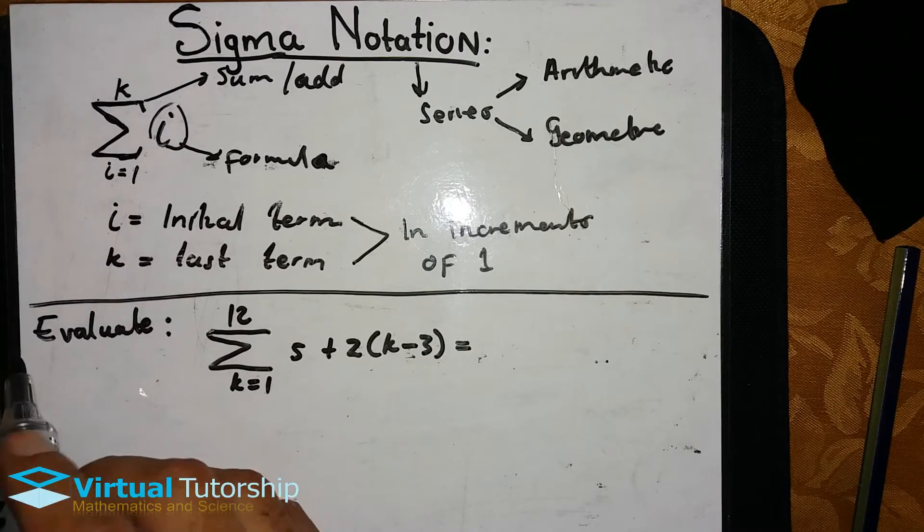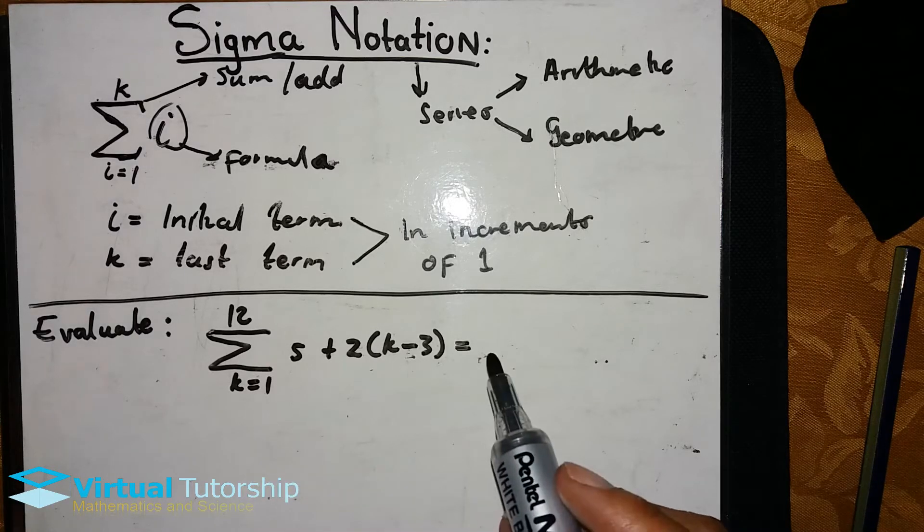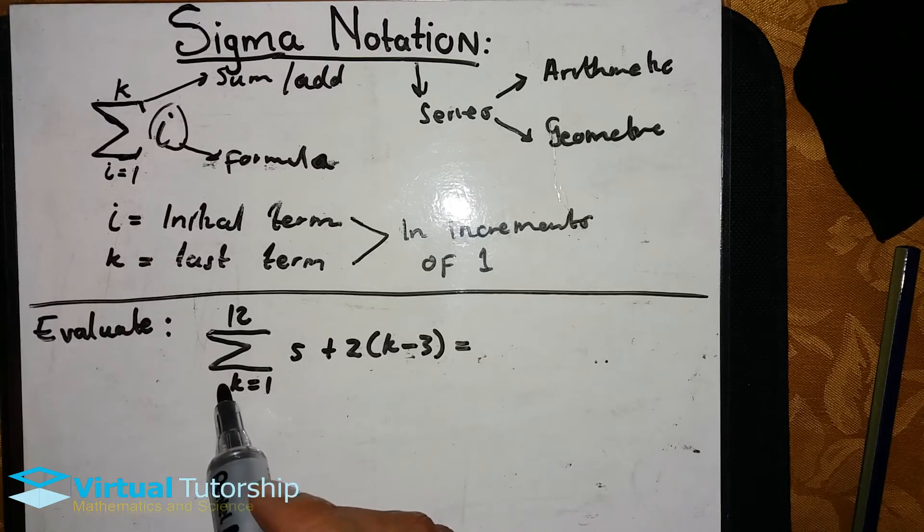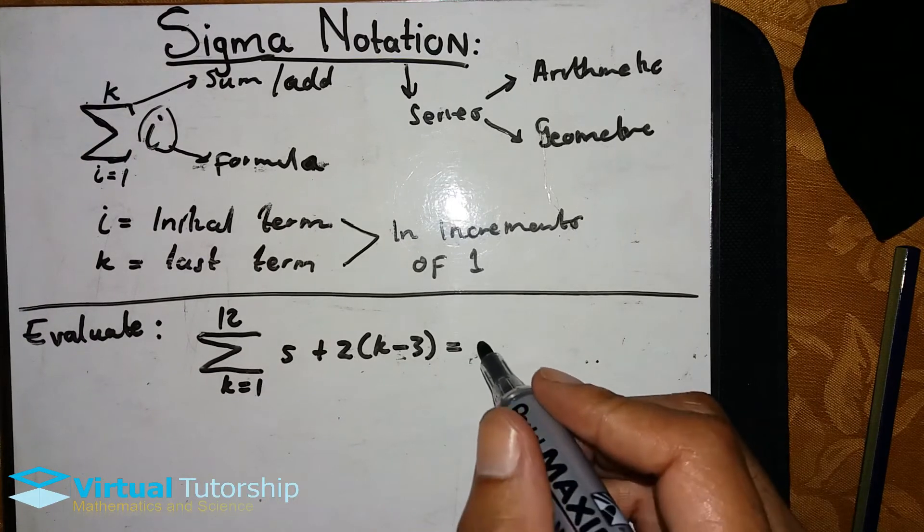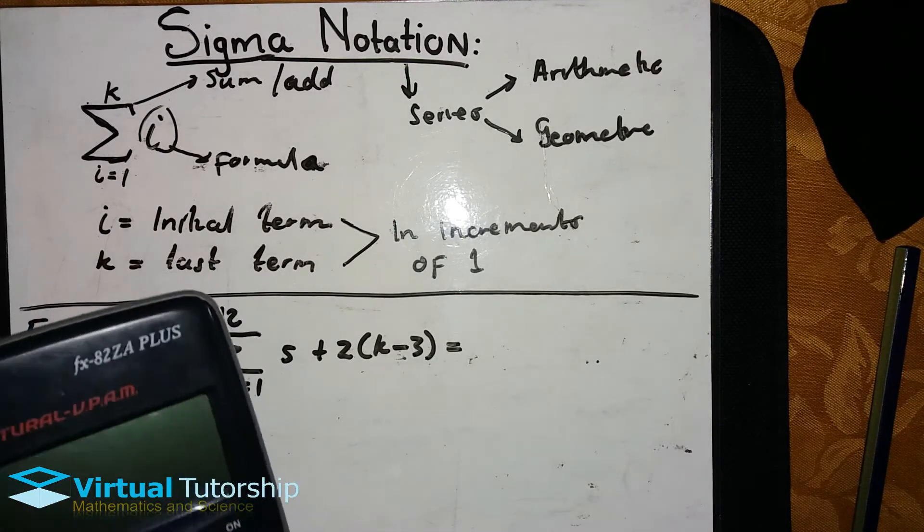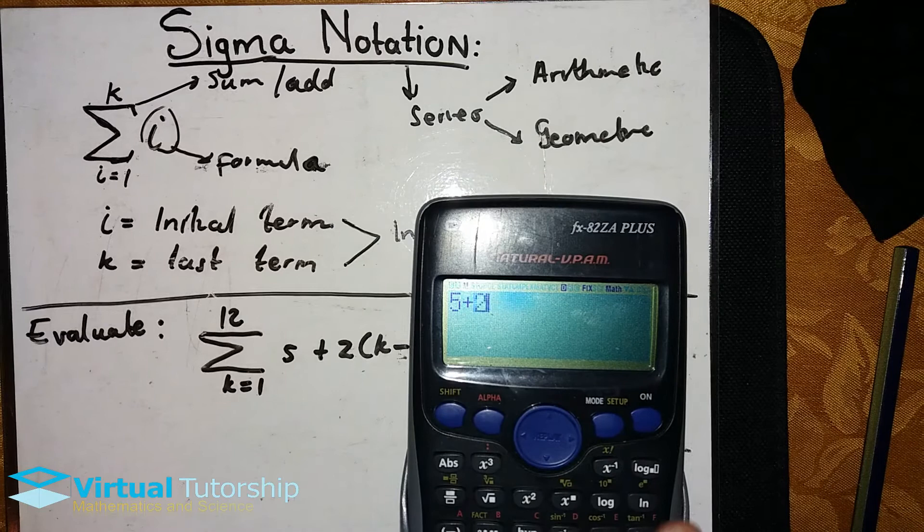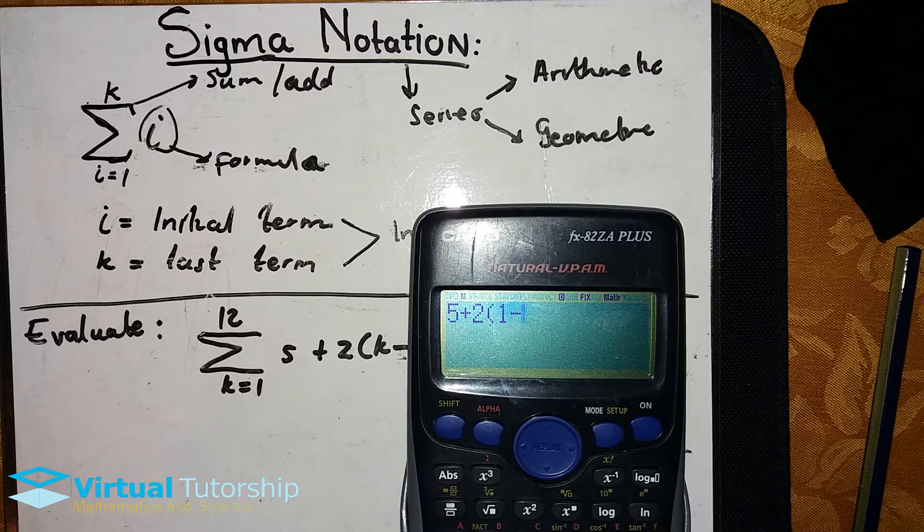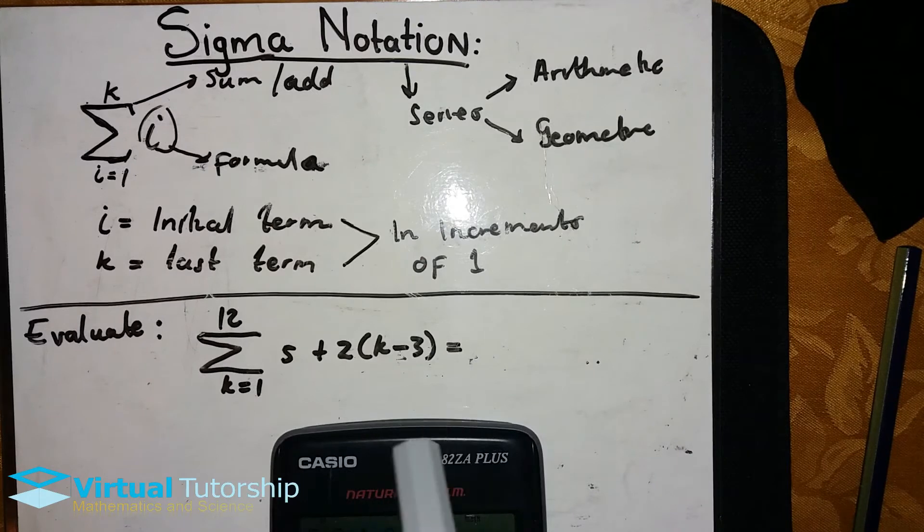We rewrite the Sigma notation as a series, then we evaluate it. Now calculate the sum. We need to calculate the sum of the terms from k equal to one all the way up to k equal to 12. I prefer using a calculator when doing this stuff. The formula here is 5 plus 2 in brackets k minus 3.